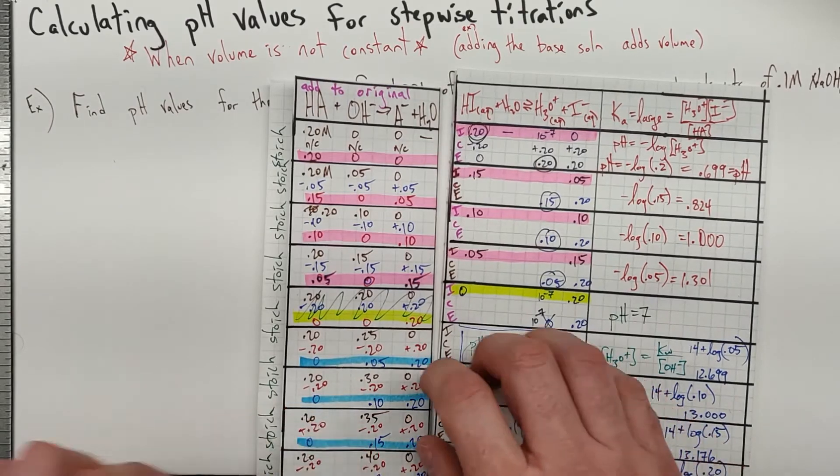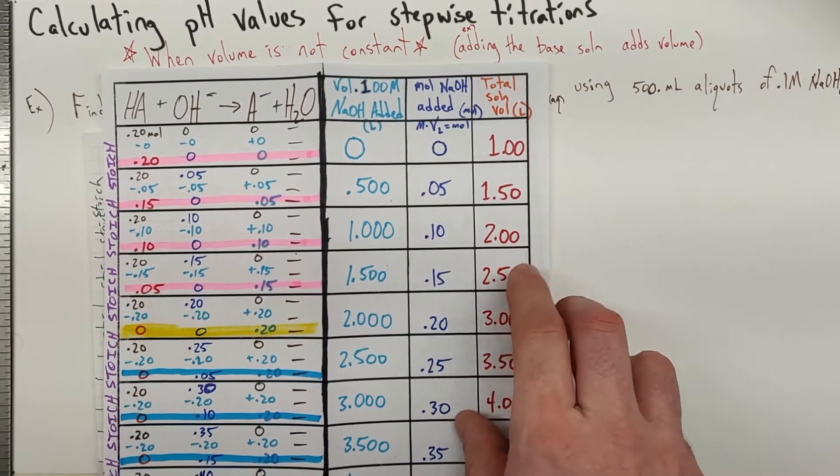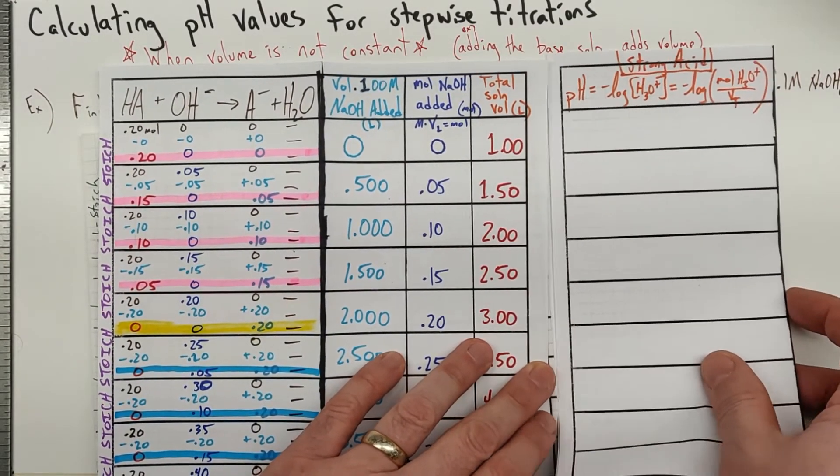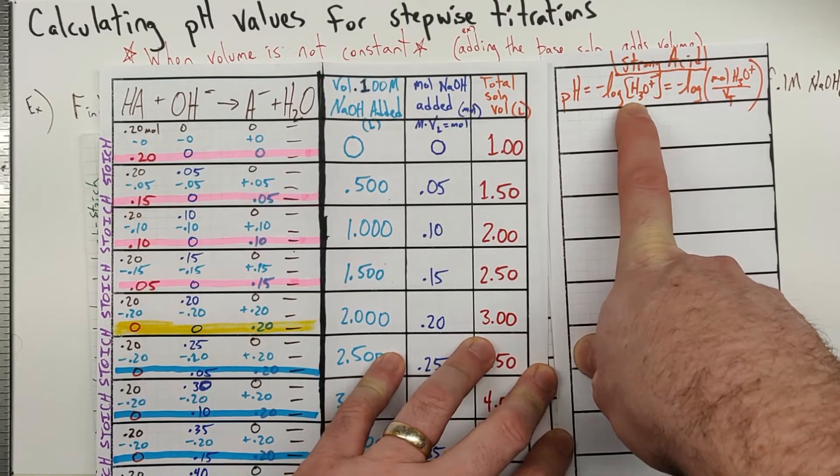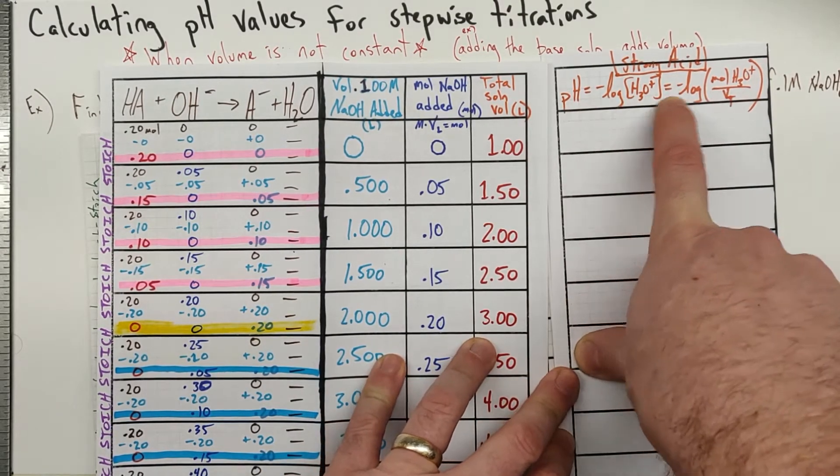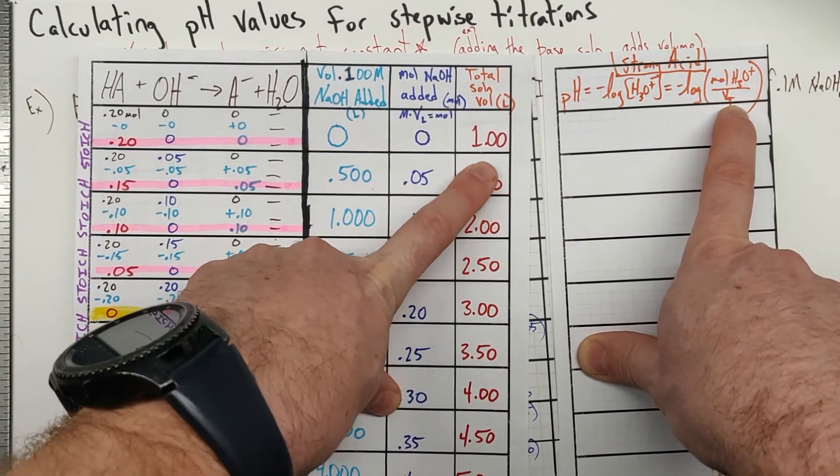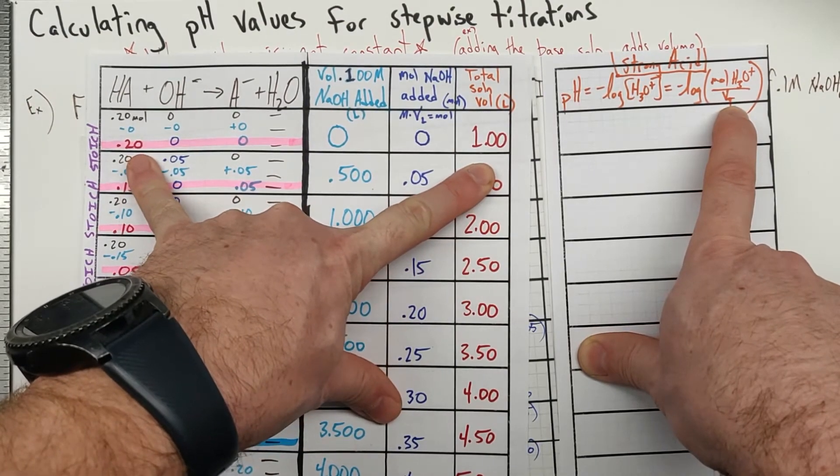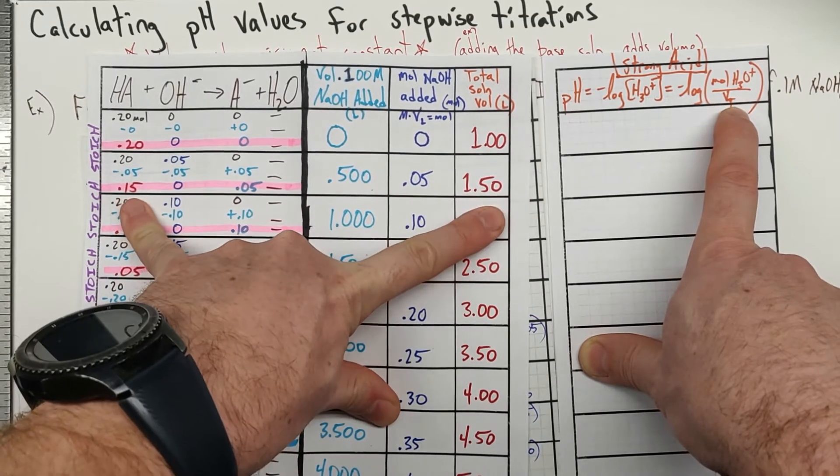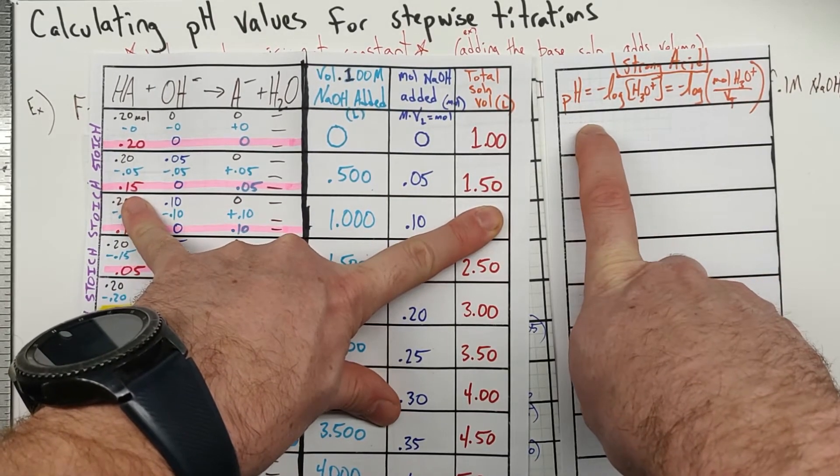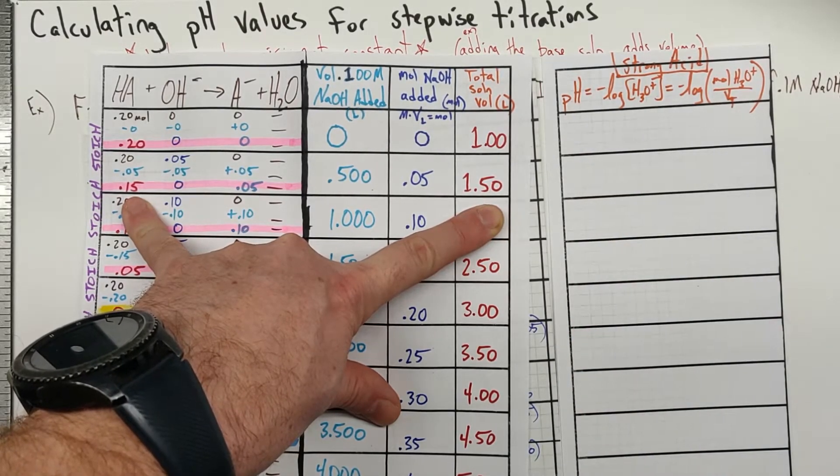So what's going to change now? Since our volume is not constant at 1 liter, when we do those pH calculations, we're going to have to take into consideration how the concentration's changing, the volume's changing. Our pH is still going to be the negative log of our concentration of H+ or H3O+, but that concentration is going to be our moles, which are these numbers here, divided by our total volume, which I wrote over here.